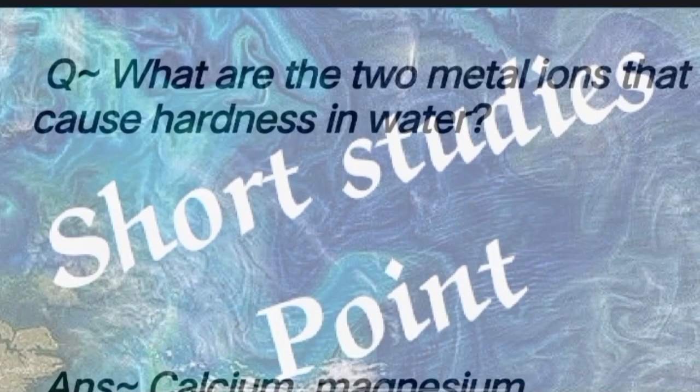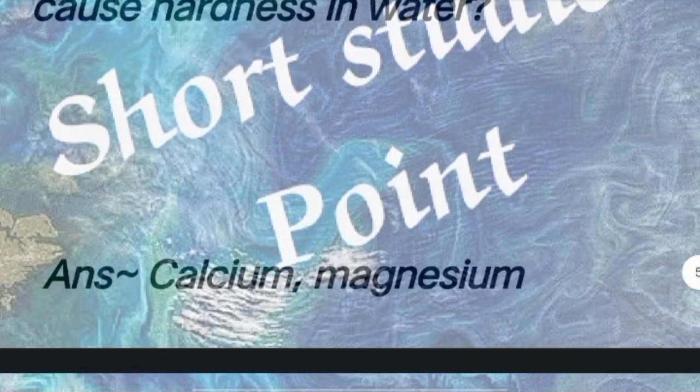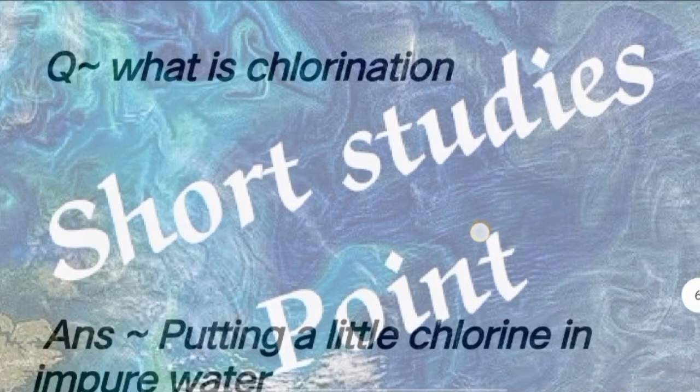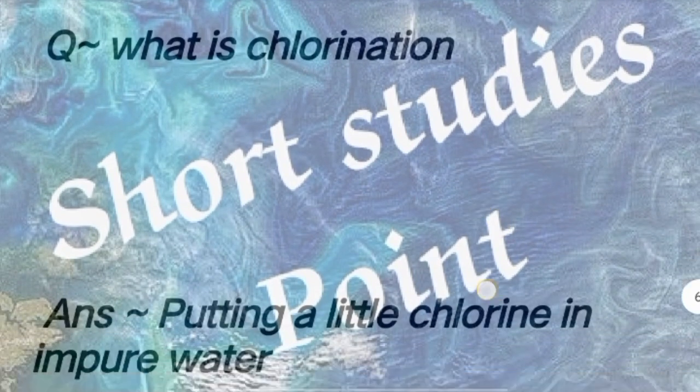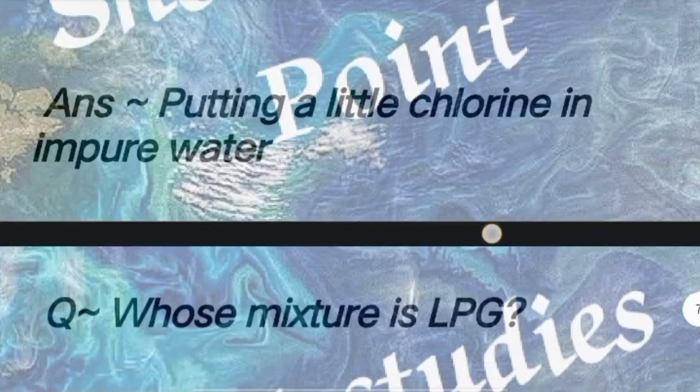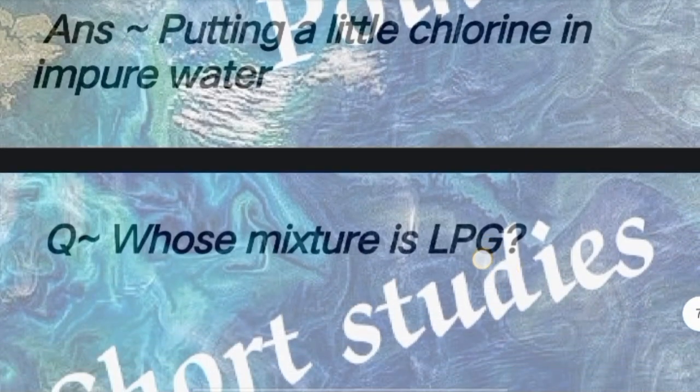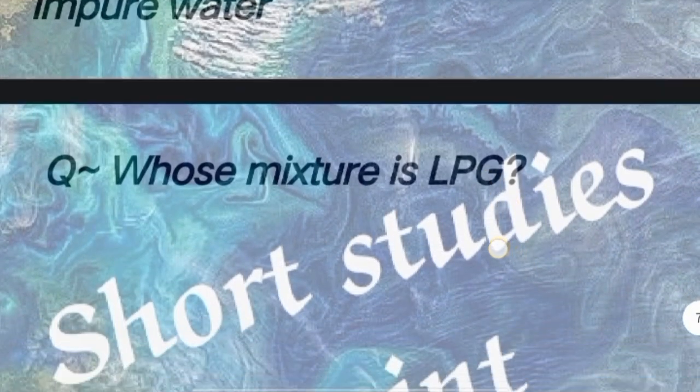What are the two metals that cause hardness in water? Answer: Calcium and magnesium. What is chlorination? Answer: Putting a little chlorine in impure water.